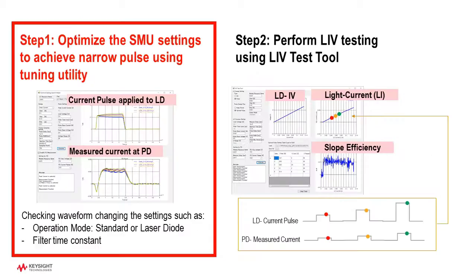Step 1: Optimize the SMU settings to achieve narrow pulse using the tuning utility. The SMU's pulse rise time depends on the device's impedance. M9602A and M9603A offer various options to optimize the pulse rise time according to the need of your device.